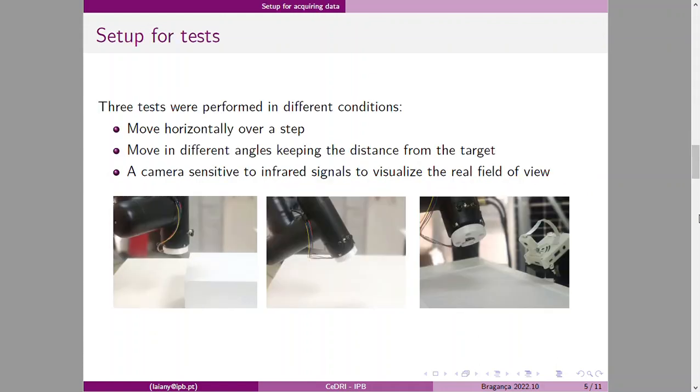Three tests were performed in different conditions. For the first one, the sensor moved horizontally over a step in order to analyze the sensor behavior facing an abrupt difference of distance. For the second test, the sensor moved at different angles keeping the distance from the target. In the last test, a camera sensitive to infrared signals was applied to visualize the field of view.